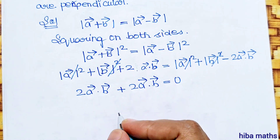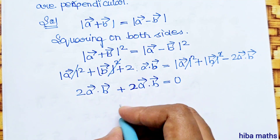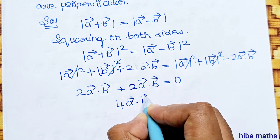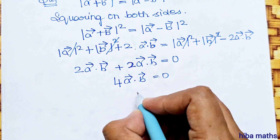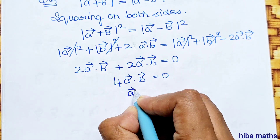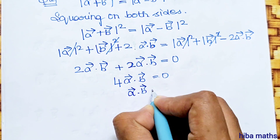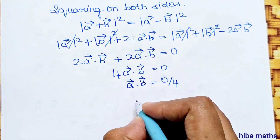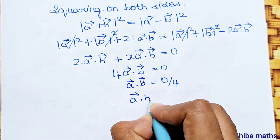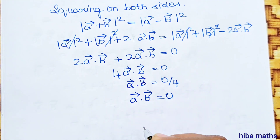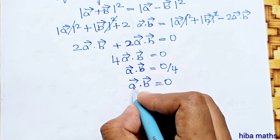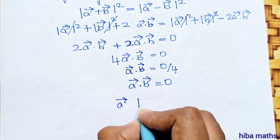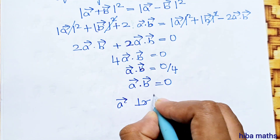Simplifying: 2 plus 2, giving 4 times (vector a dot vector b) equals 0. Dividing both sides by 4: vector a dot vector b equals 0 by 4, which is 0. Since the dot product of the two vectors equals zero, vector a is perpendicular to vector b.